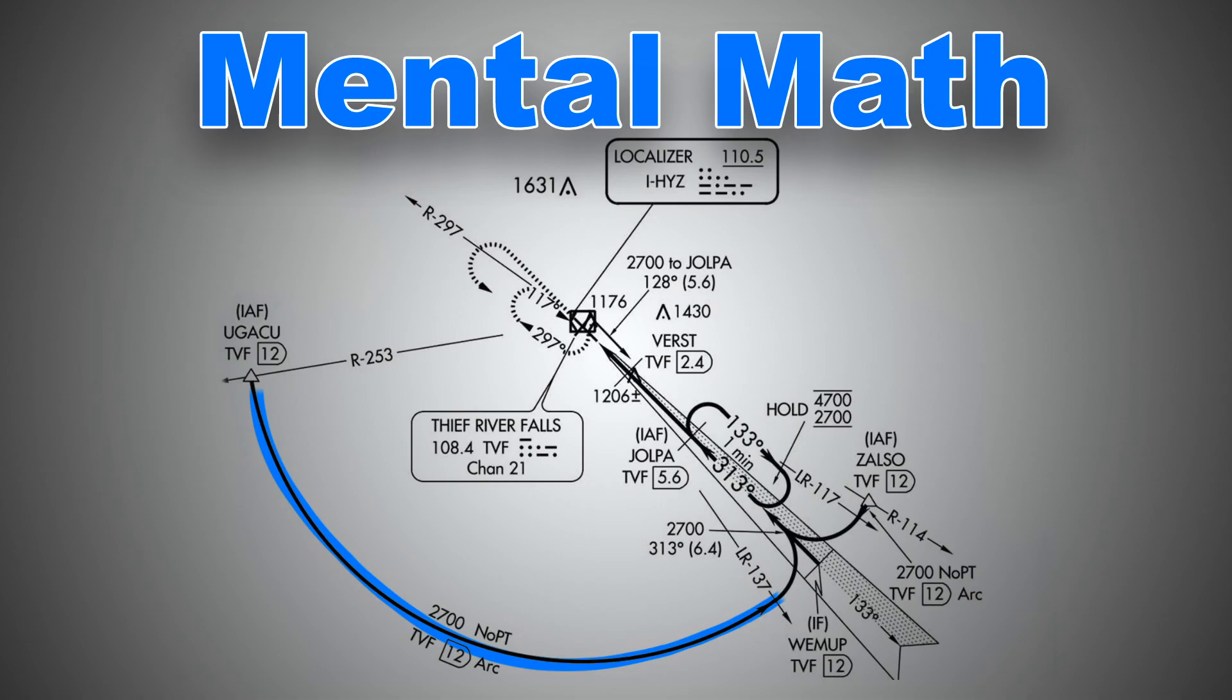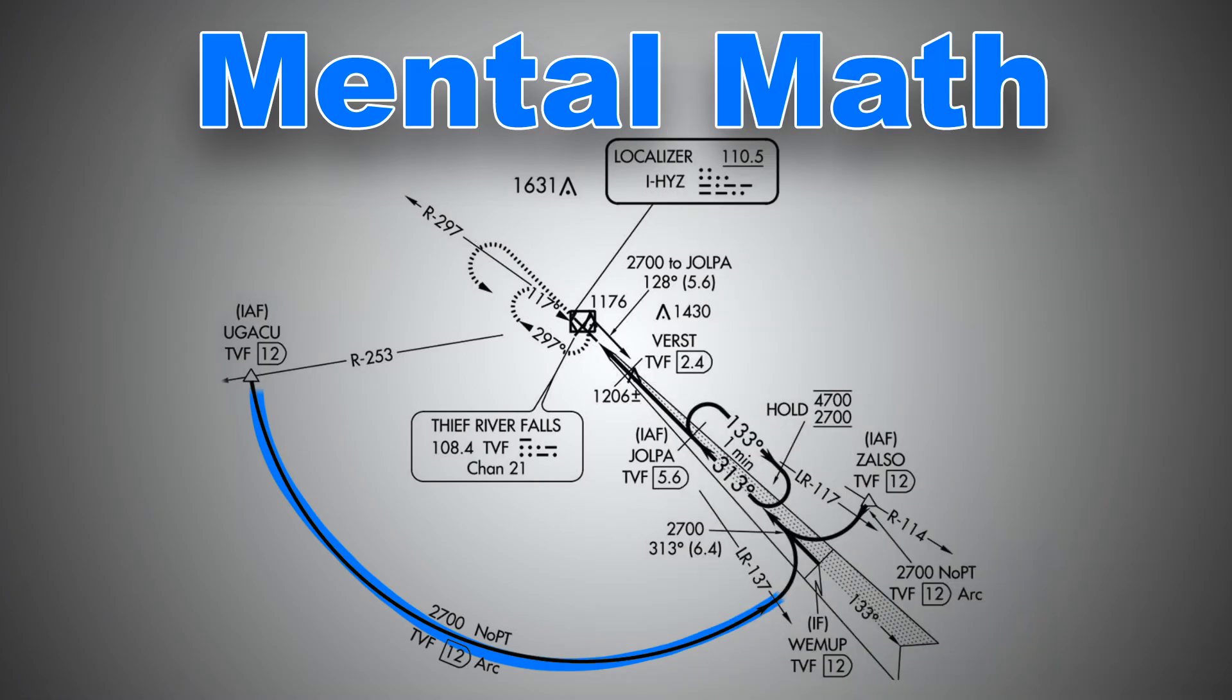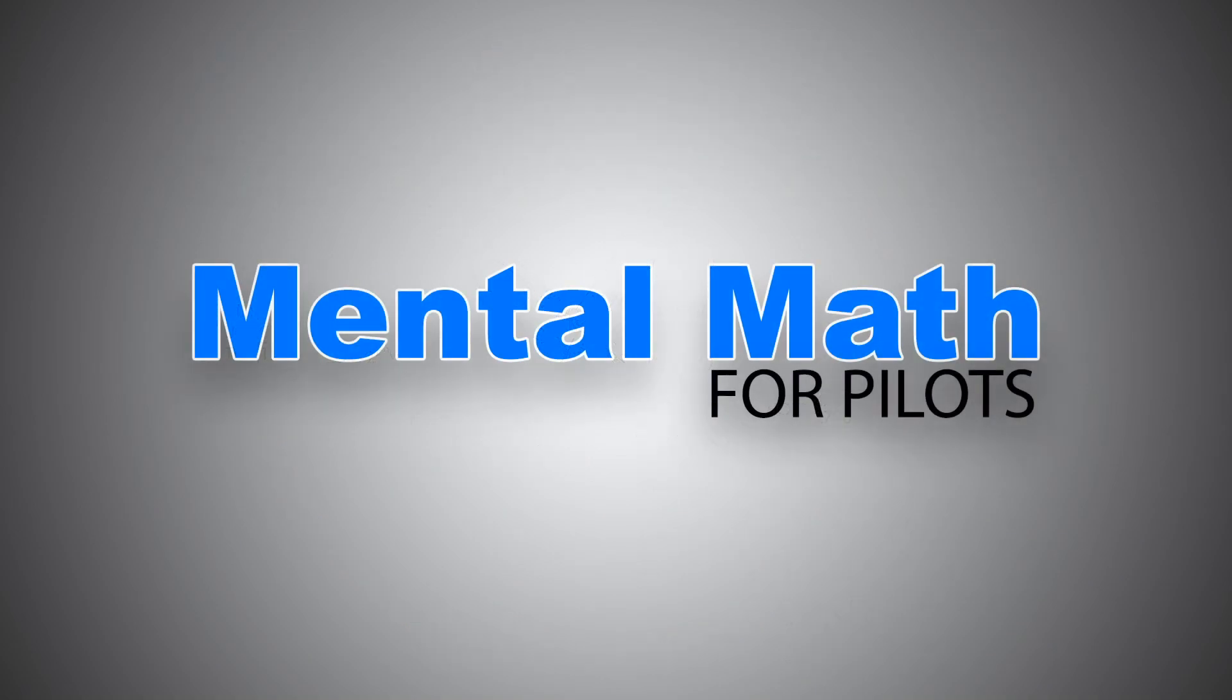This is one more example. Now the approximate distance between radial 253 and 137. Again, we get the distance or the difference in degrees between these two radials, which is in this case 116. We divide 116 by 4, and we get 29 nautical miles. Again, this is a rough figure. It just gives us an idea how far away we need to go.